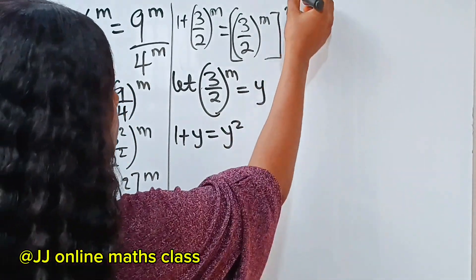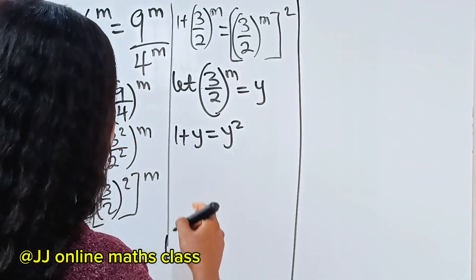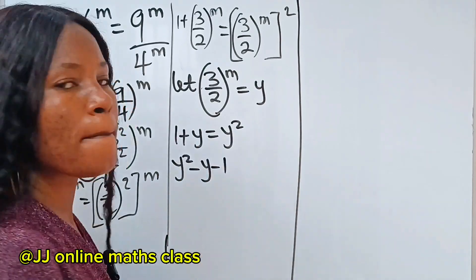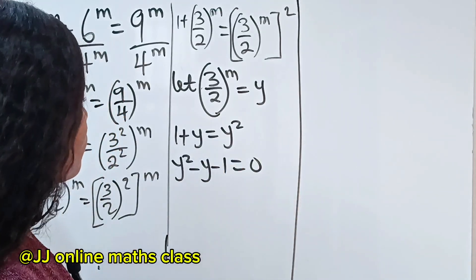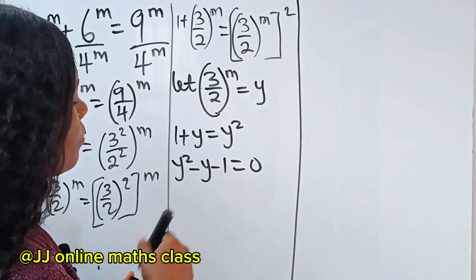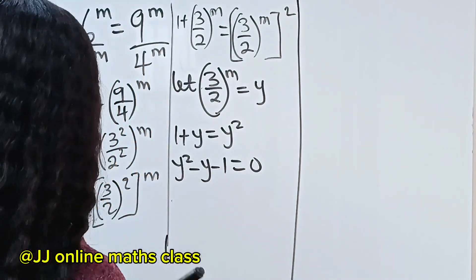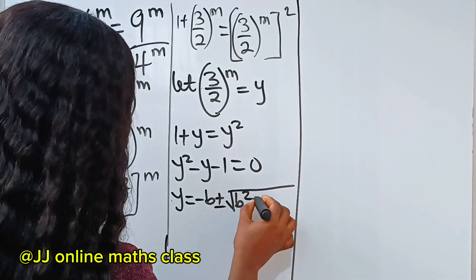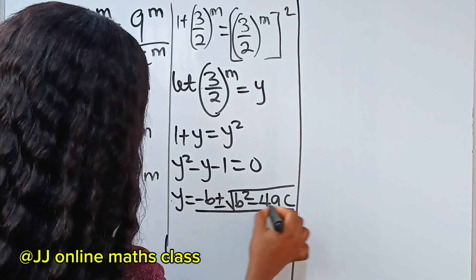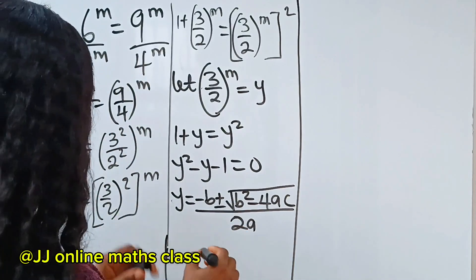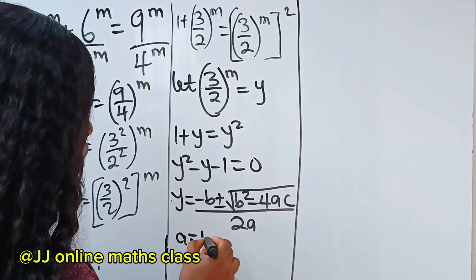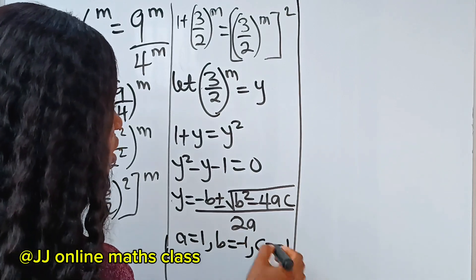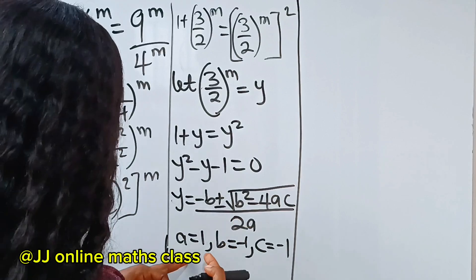We've formed a quadratic equation. Rewriting it: y squared minus y minus 1 equals 0. Using the quadratic formula, y equals minus b plus or minus square root of b squared minus 4ac, all over 2a. In this case, a equals 1, b equals minus 1, and c equals minus 1.